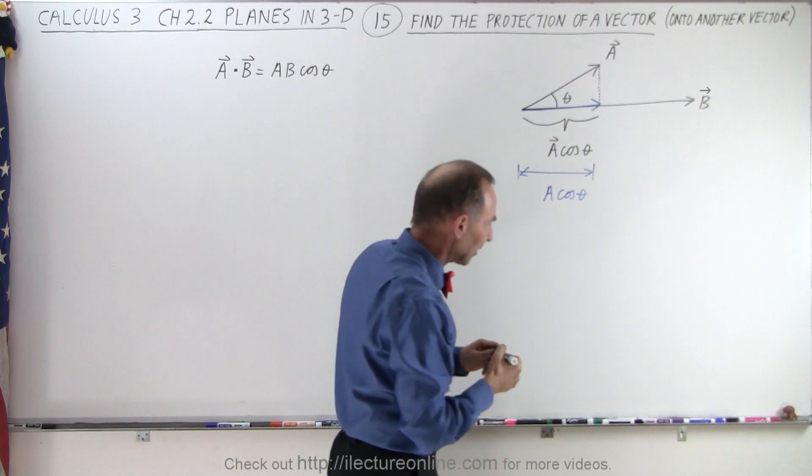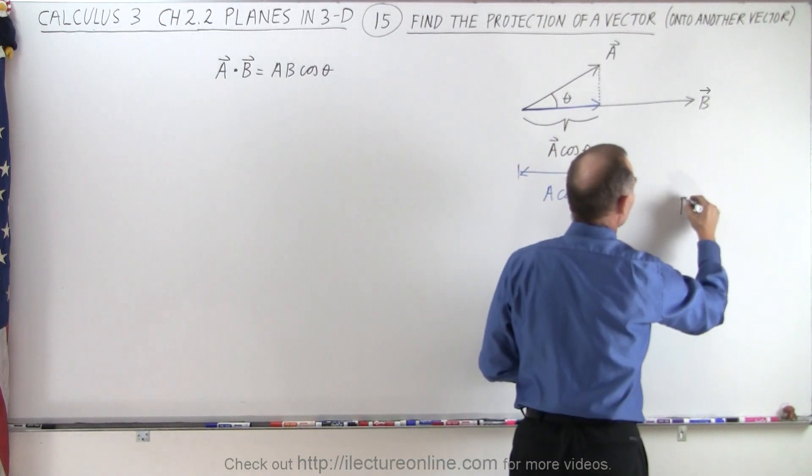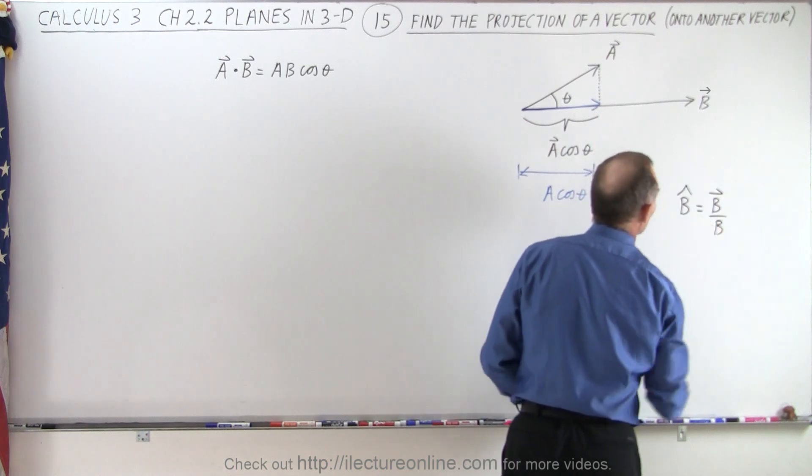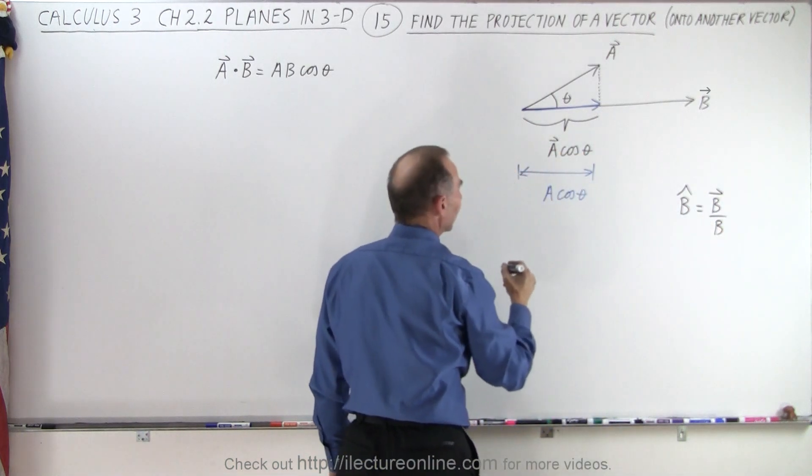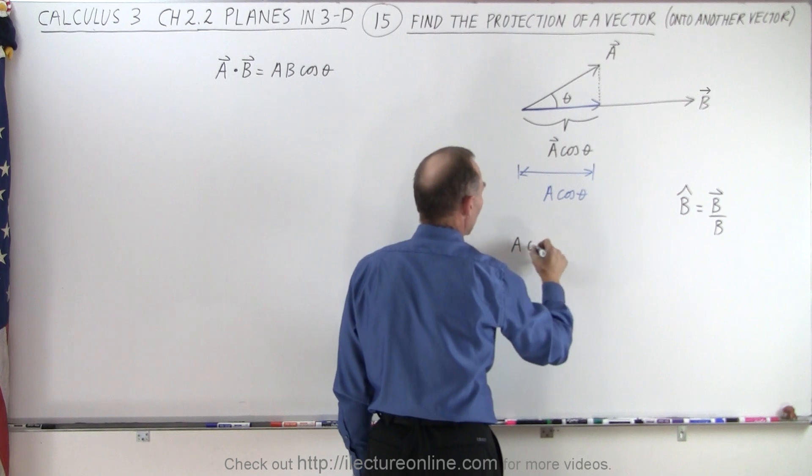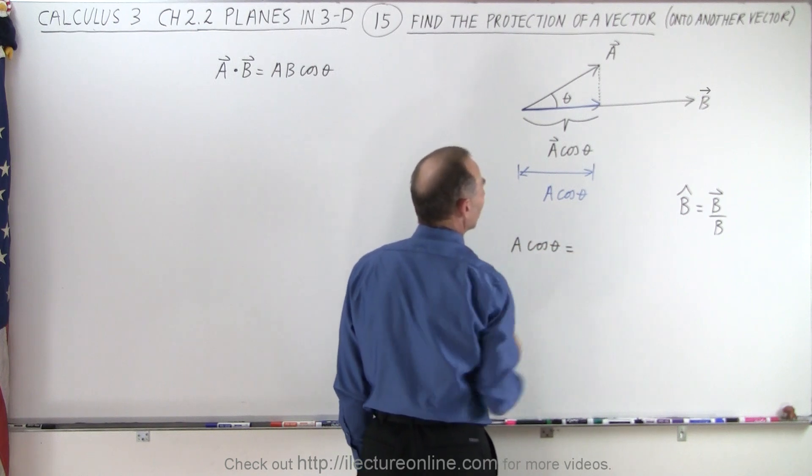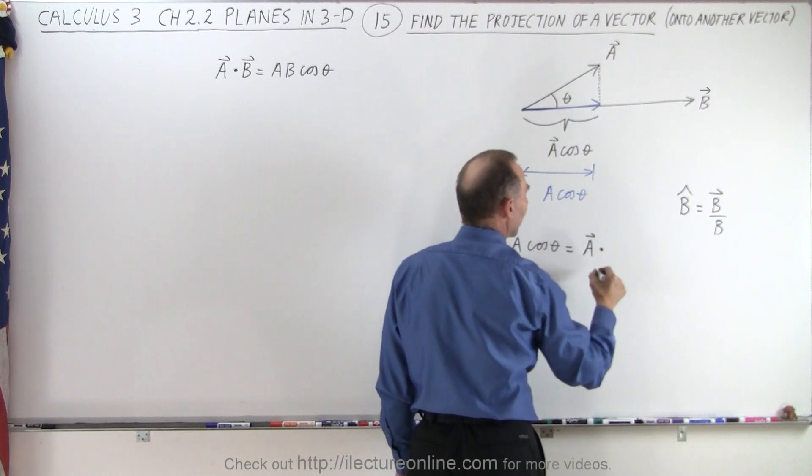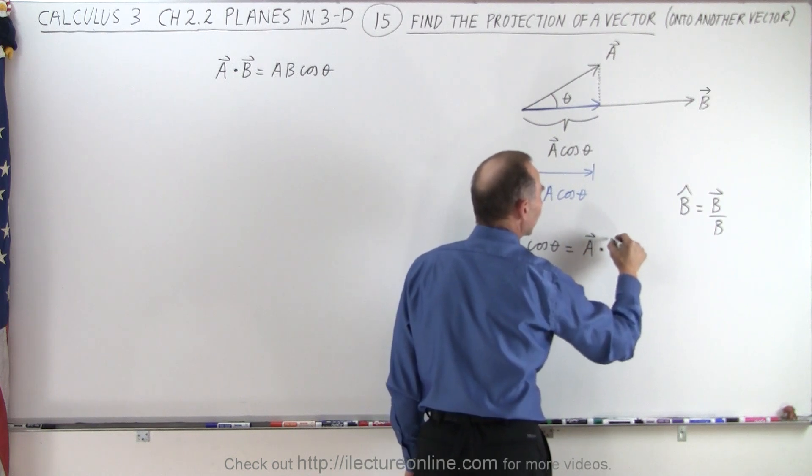So the unit vector B can be defined as being the vector B divided by its own magnitude. And so therefore, I can say that A times the cosine of theta can be accomplished by taking the A vector and taking the dot product with the unit vector of B.